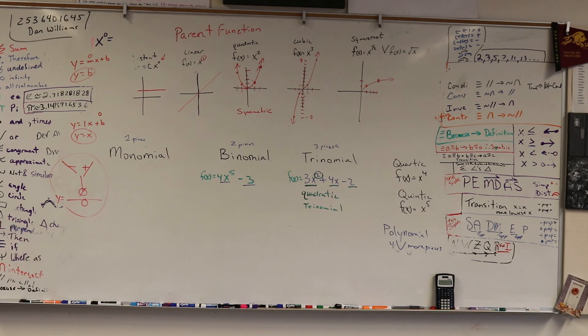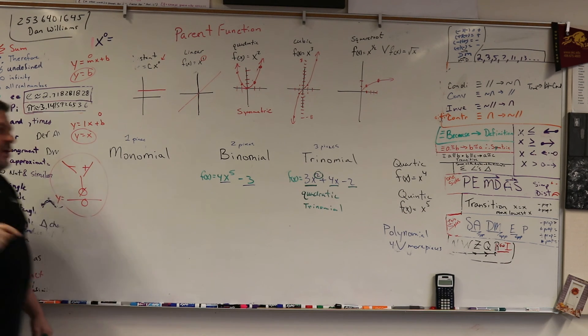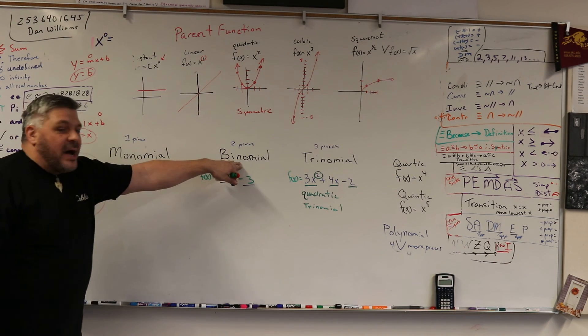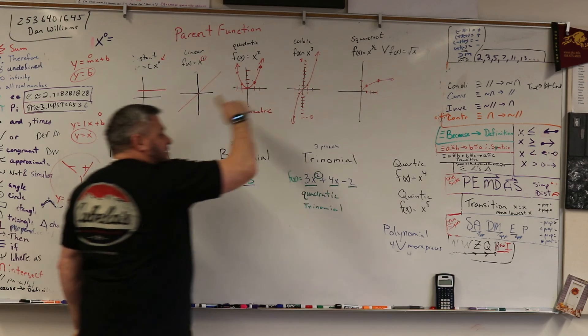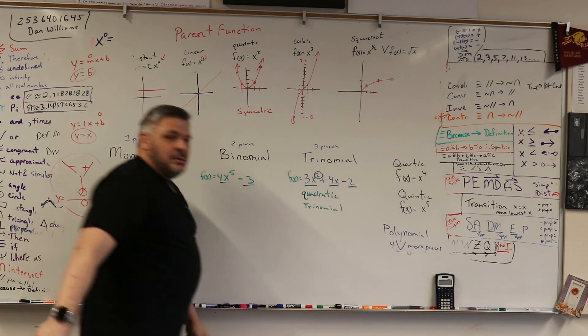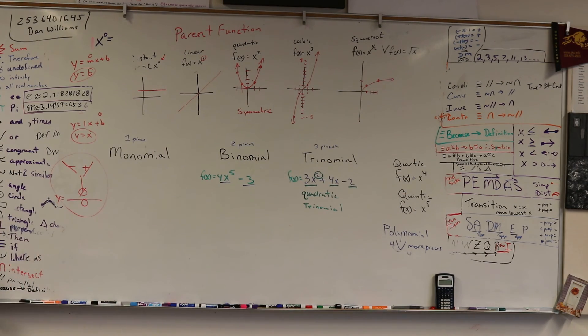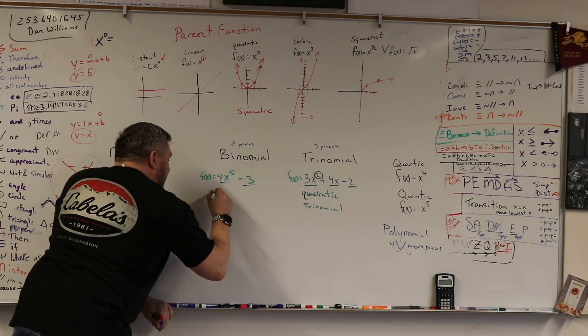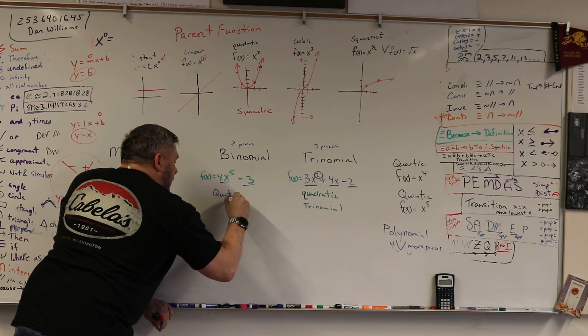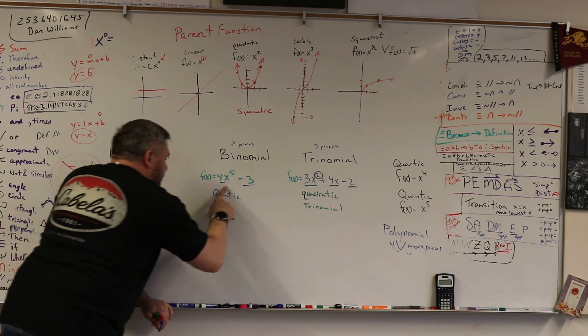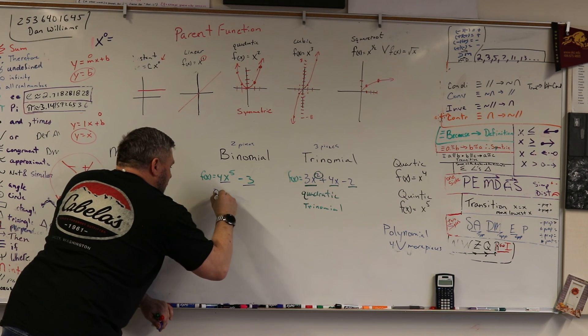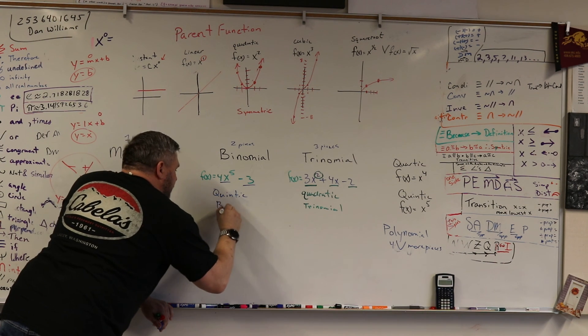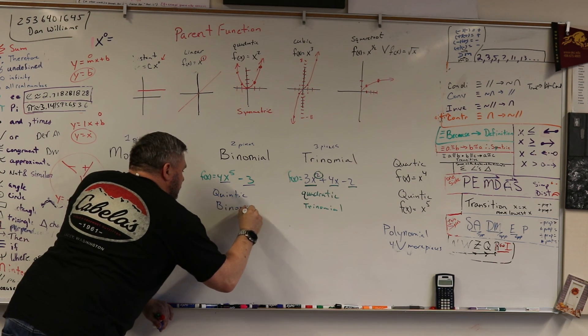No. What's the highest power? Five. Five. Oh, it's a polynomial. So which? No, no. It is a polynomial, but it is a binomial because it's two pieces. But which one has a five? Quintic. Yeah. So this is called a quintic? One minute. Thank you. Quintic what? Quintic binomial.